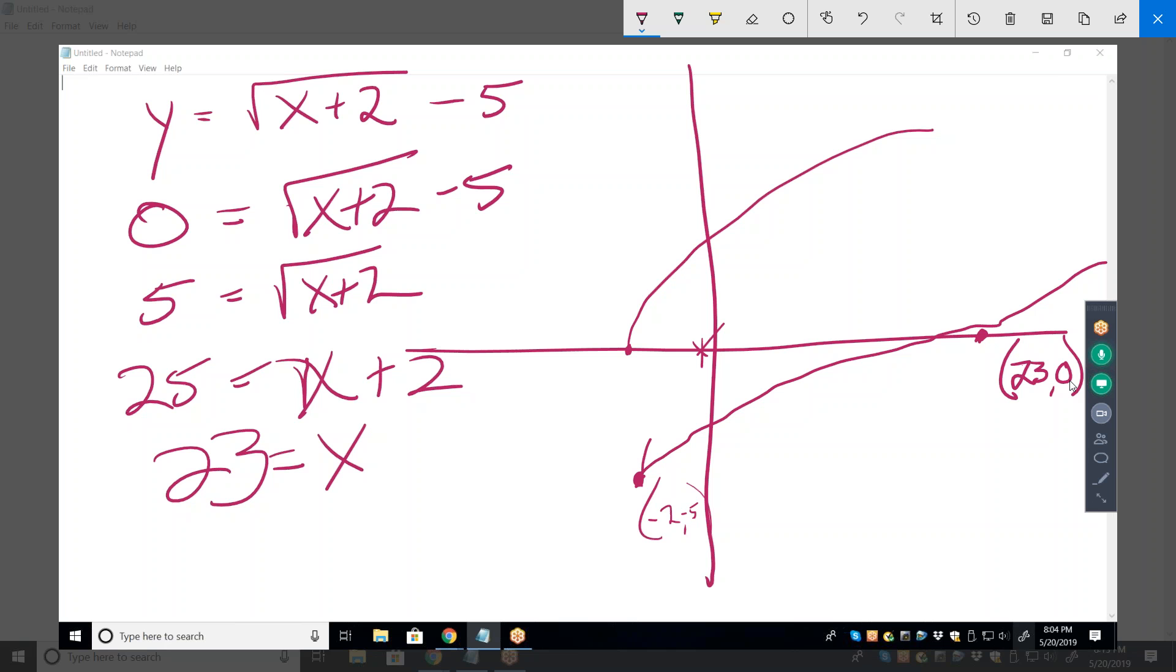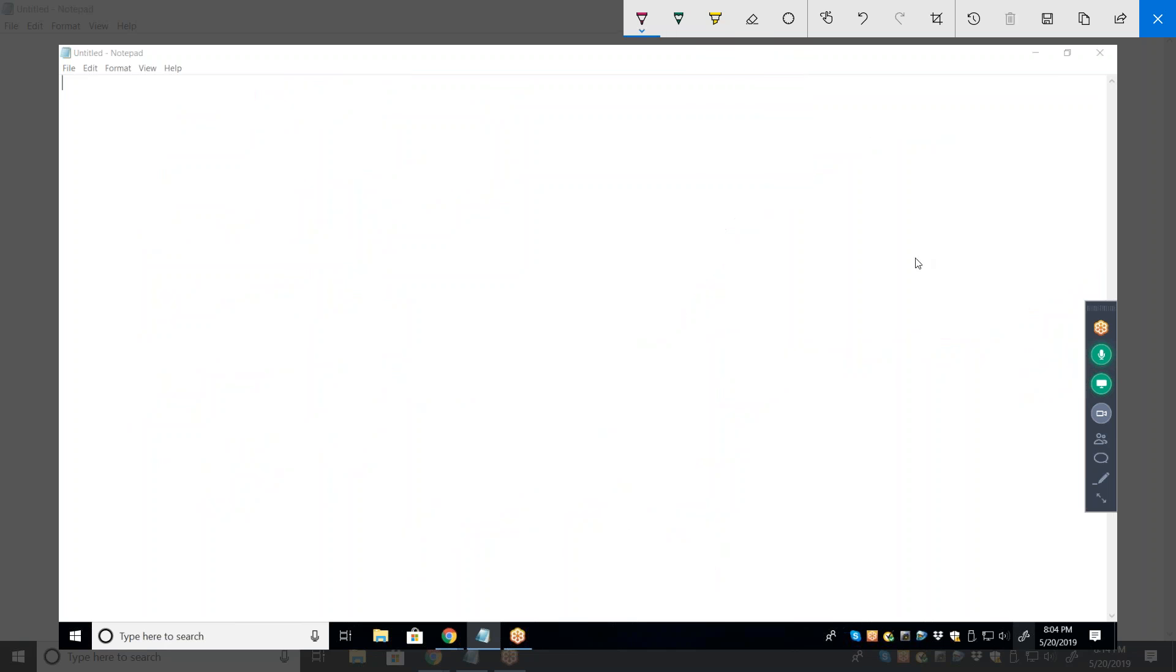And if I wanted to know this point right here, what would I do? Wait, which one? The y-intercept? Plug in a 0 for x. Okay, so y would equal the square root of 2 minus 5. Okay. All right. I think I'm good on this. Okay. I'm good on those two.